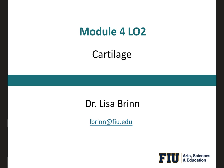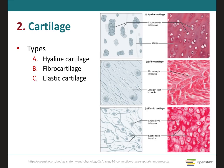For this learning outcome of Module 4, we will be talking about cartilages. As we have learned earlier, there are three different types of cartilages. We have the hyaline cartilage, the fibrocartilage, and the elastic cartilage. You can also see them on these images, how they differ from each other.